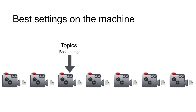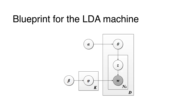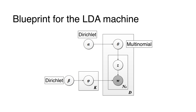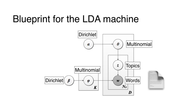To understand how the machine works, we look at its blueprint. This is the blueprint of LDA, which appears in most of the literature. At first glance it looks complicated, but if we look at the parts, it's not that bad. Alpha and beta are Dirichlet distributions, which I'll explain later. Theta and phi are multinomial distributions. From these multinomial distributions we create topics and words, and that's how we create documents by stringing words together.